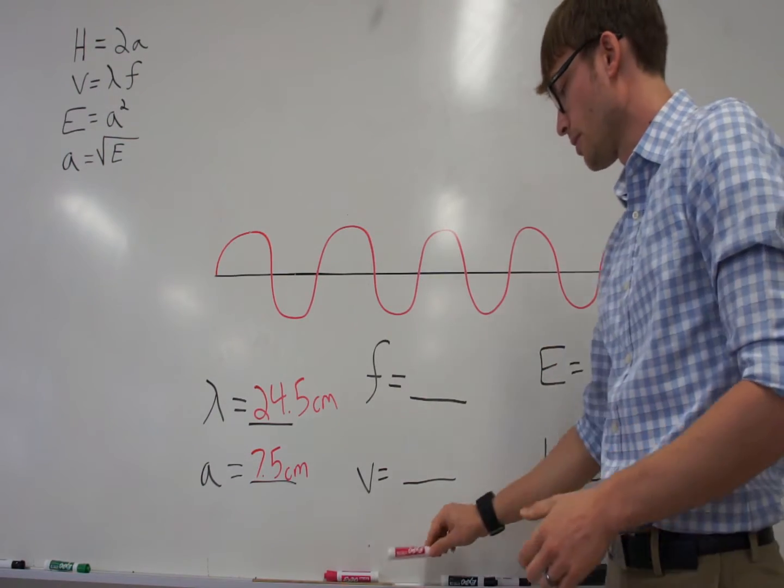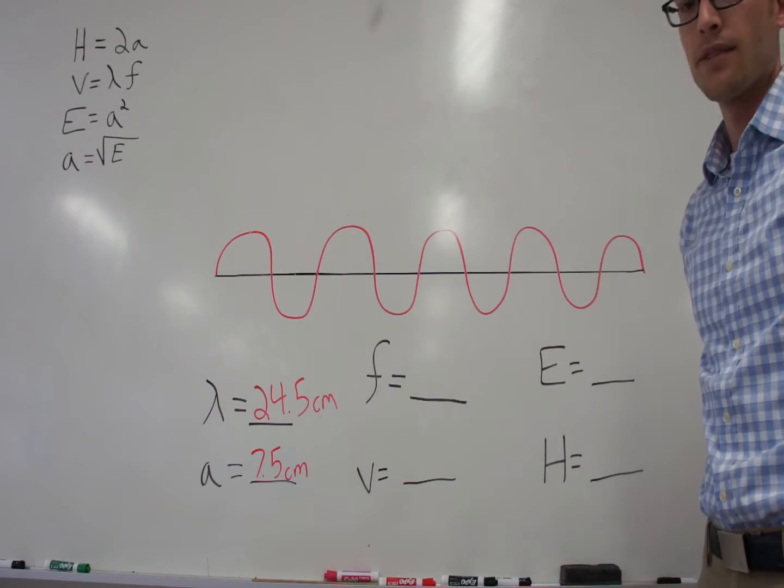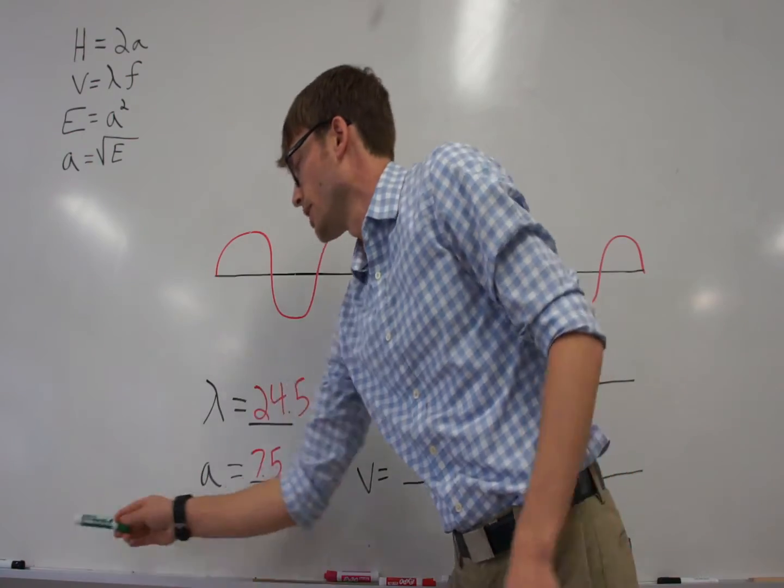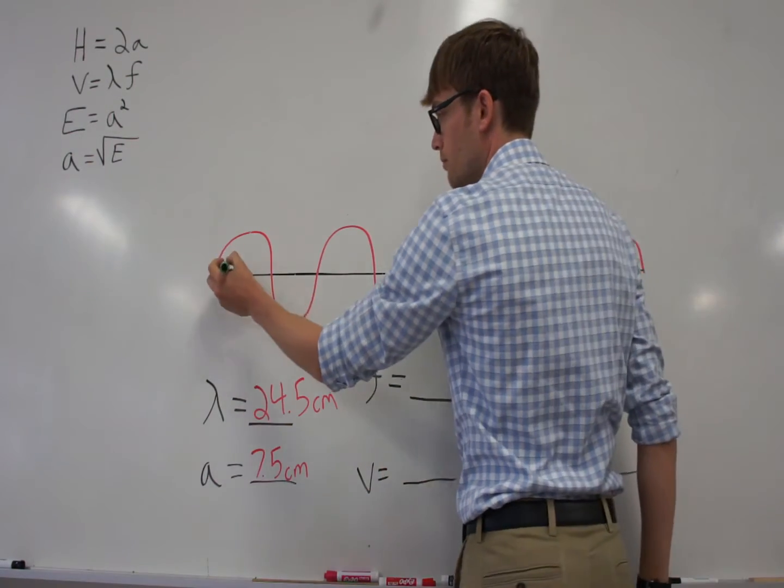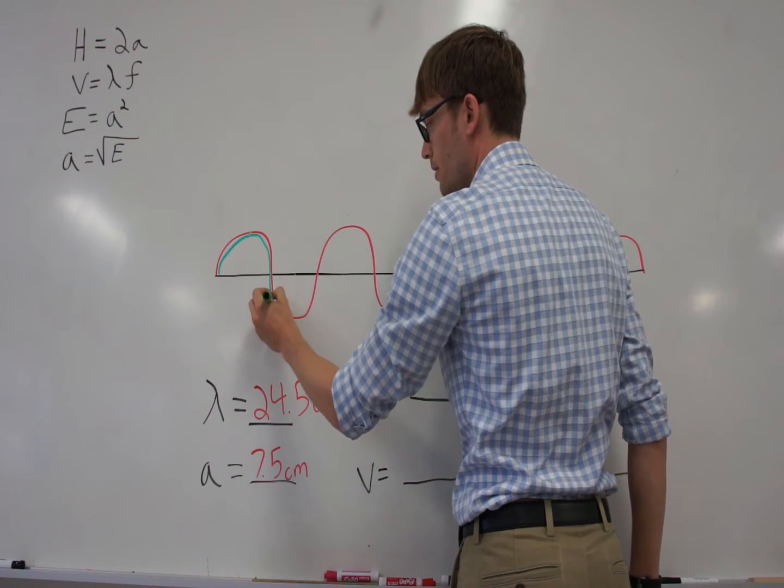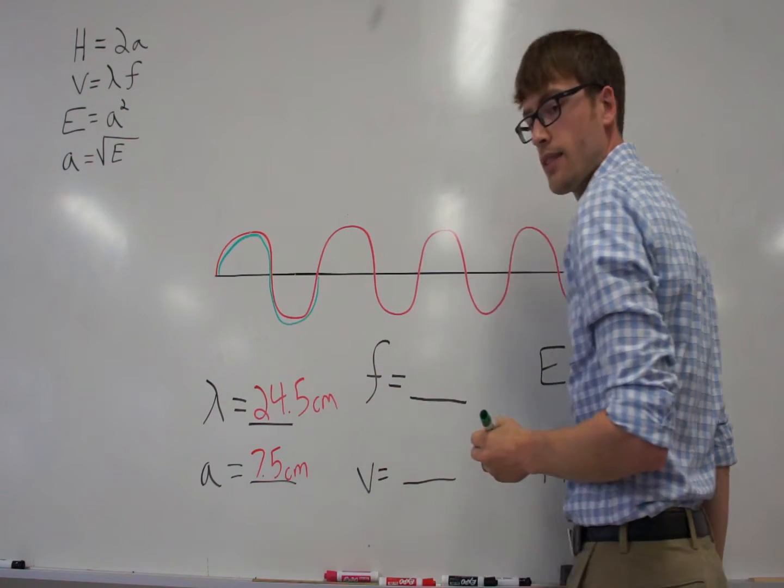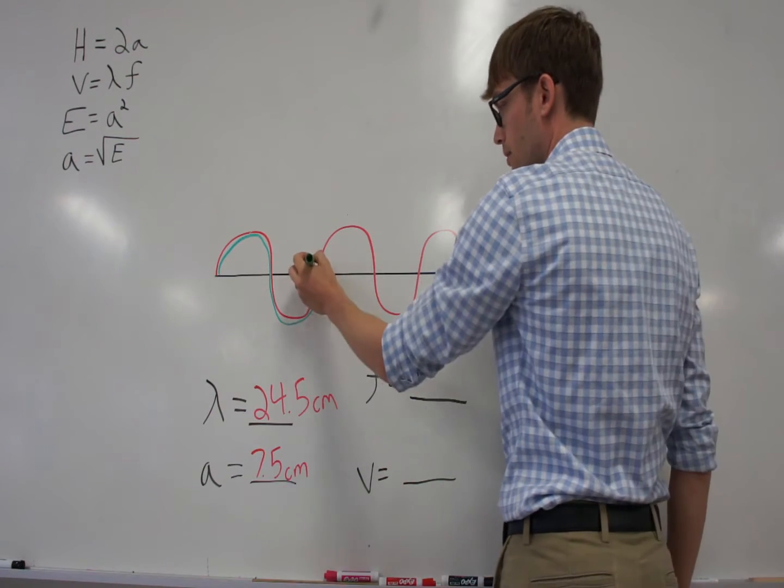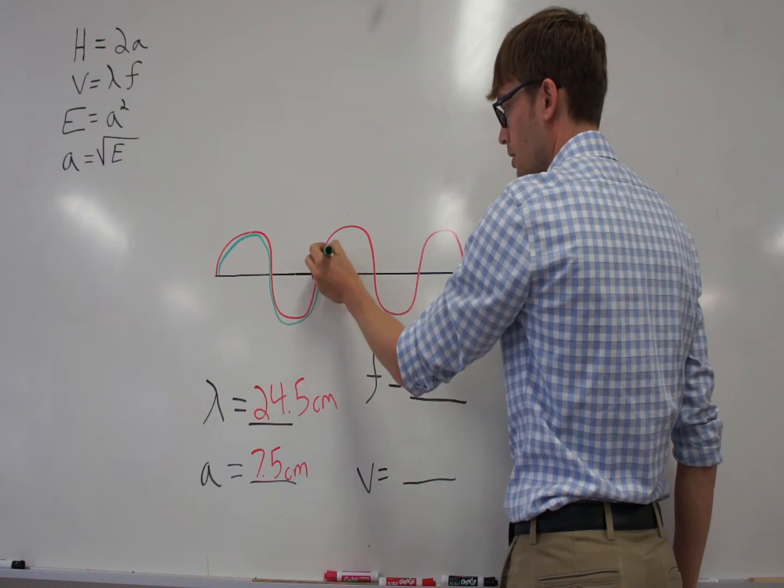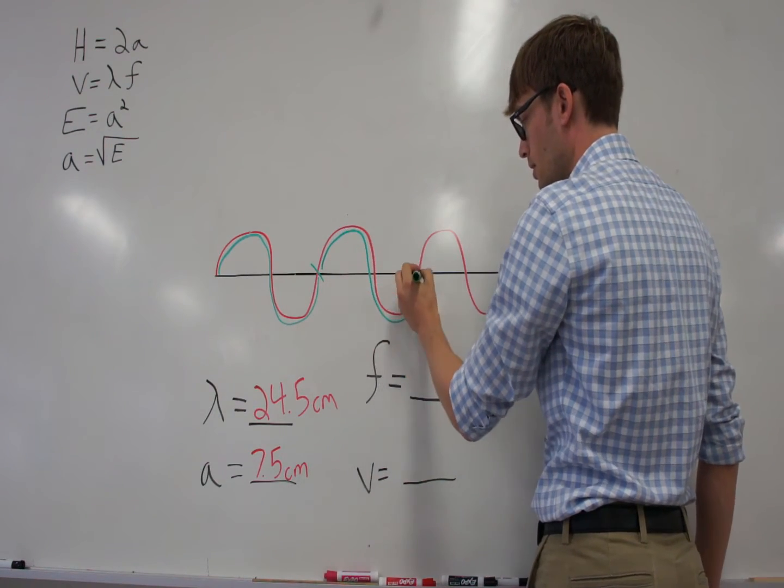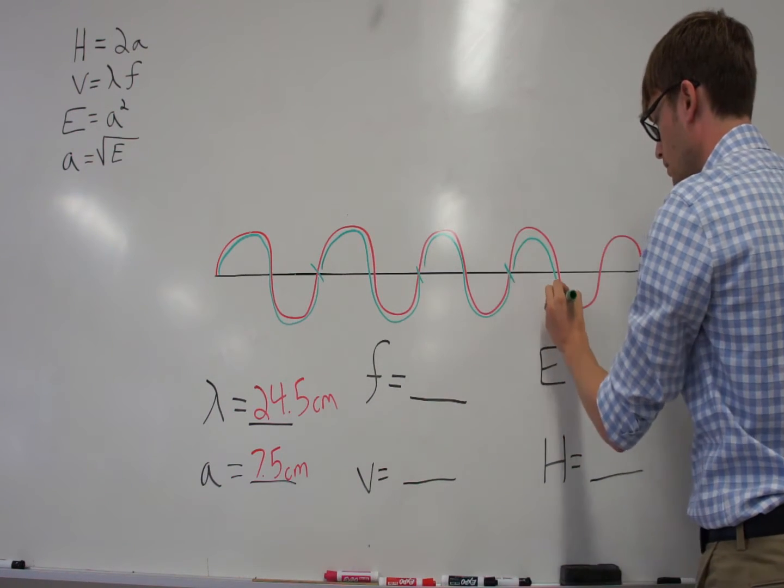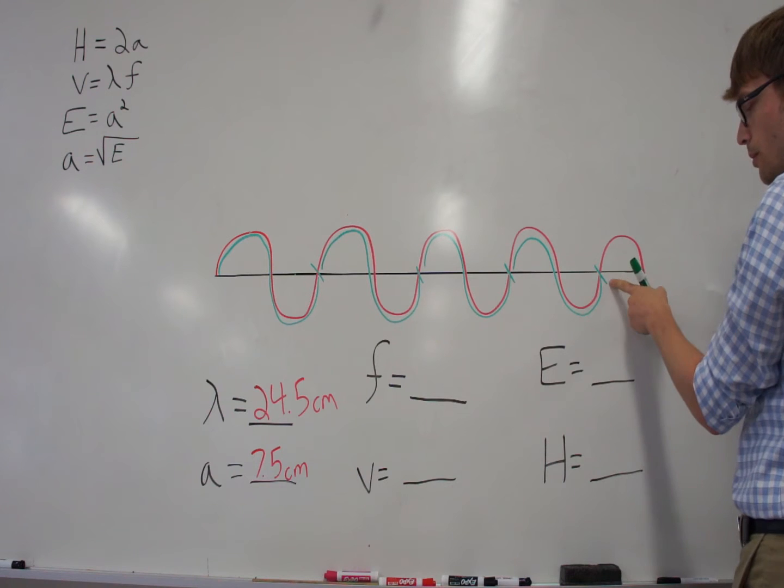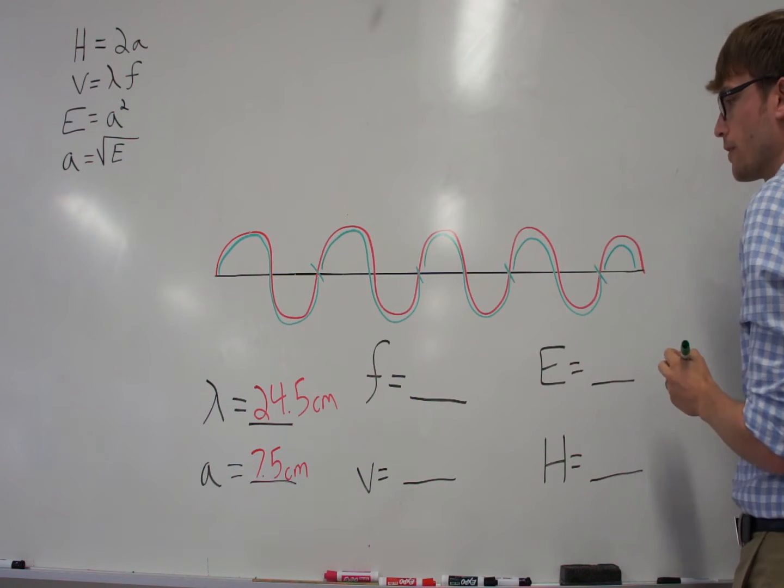Now, to find your frequency, you need to do what I call the S method. Simply trace an S on your wavetrain. Start at the beginning, all the way to the left, trace. That's one S, and it's one wavelength. Mark it off so you know. That's one, two, three, four, but we're not done, point five.